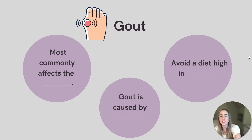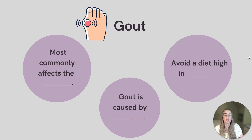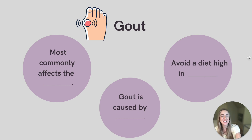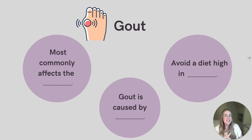Pain can be so severe that it hurts even when a sheet touches the affected individual's toe. There are many different factors that can contribute to this condition, such as genetics, medications, and diet. A diet high in purines can contribute to gout — things like red meats, seafood, and even alcohol.